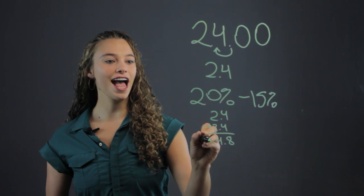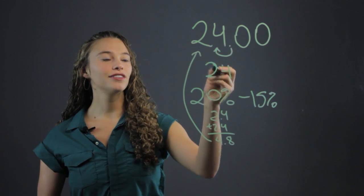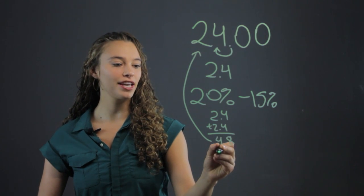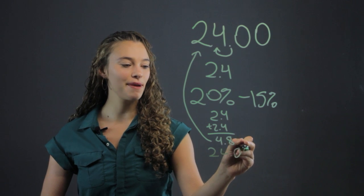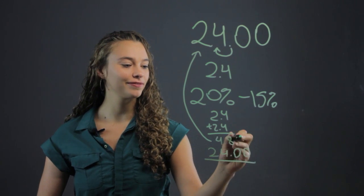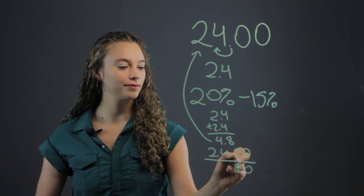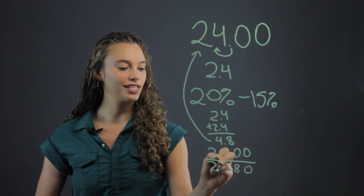Then we just add that back to 24, 24 plus 4.8. Have them line it up so they don't make any mistakes. It's very important. And then we end up getting $28.80.